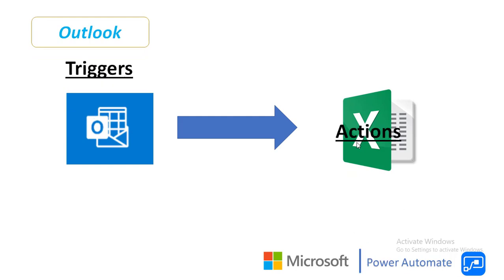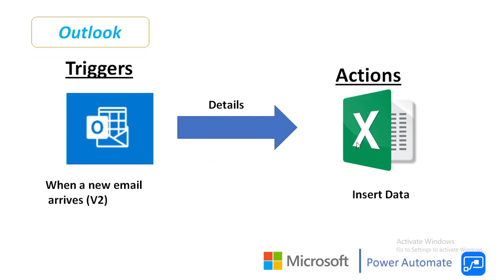Now I will show you an example of how to use these triggers and actions. In my Outlook, when a new email is addressed to my email ID, that is the triggering point. I want to fetch all the details from that email into Excel Online. Based on the trigger, it will collect all the details using the connector, and then insert the data into Excel Online using the actions.